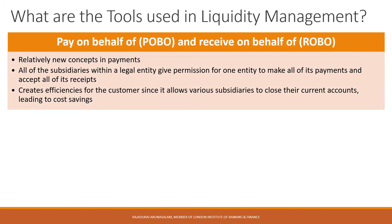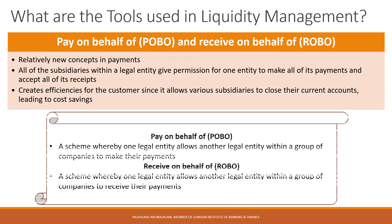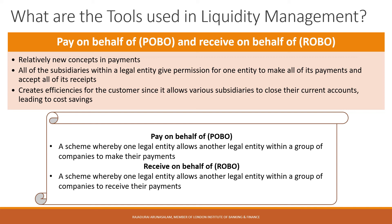Another relatively new concept in payments is POBO and ROBO — Payment on Behalf Of and Receive on Behalf Of. Both are relatively new concepts in payments. Here, all subsidiaries within a group give permission for one entity to make all payments and accept all receipts on their behalf. This creates efficiency for the customer since it allows various subsidiaries to use the main account and close their own current accounts, which leads to cost savings.